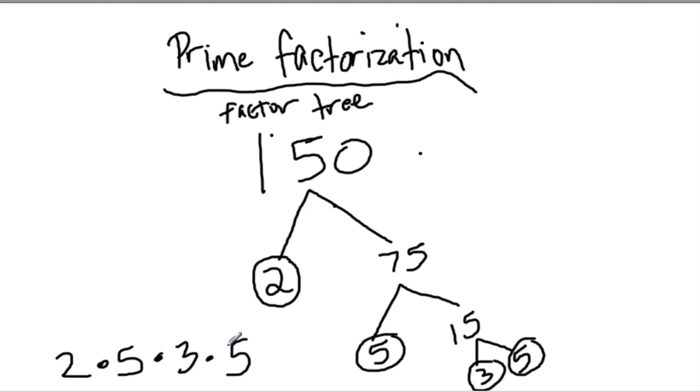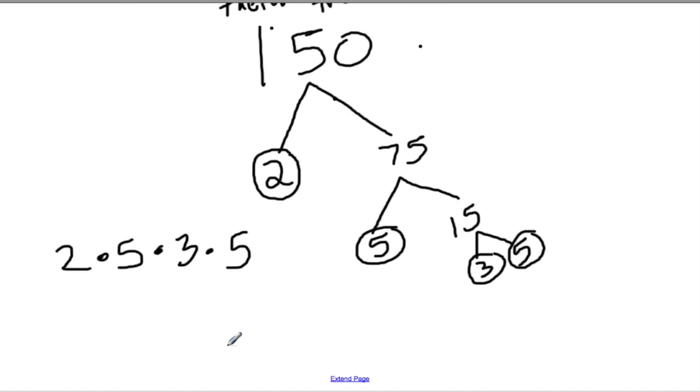Sometimes they might ask you to find the prime factorization in exponential form. Let's write that down. Exponential form. All that means is that they want you to write this product right here using exponents whenever it's possible. So for example, there's 1,